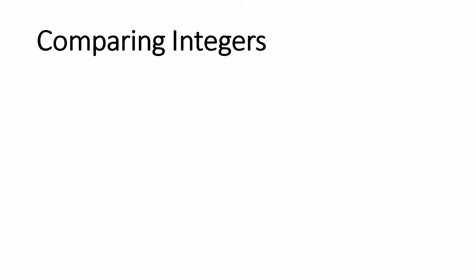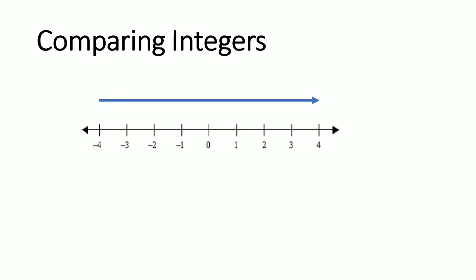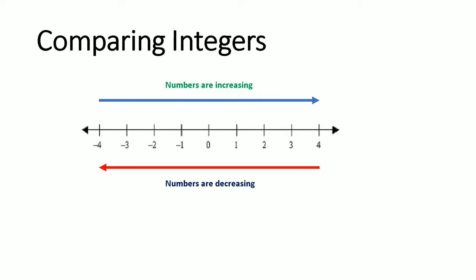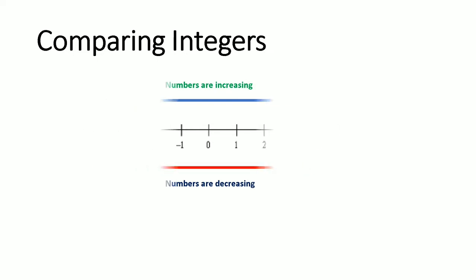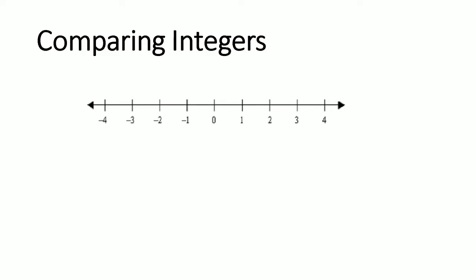Now let us put things into perspective. Suppose you were given a number line representing the temperature at any given point in time. Numbers to the right of any specific number are increasing in temperature, whereas numbers to the left are decreasing. This means that if you were to select any number, say negative 4 and negative 3, then negative 3 would be greater than negative 4. For example, if you compare 4 and 2, then 4 is greater than 2 because 4 is to the right of the number 2.